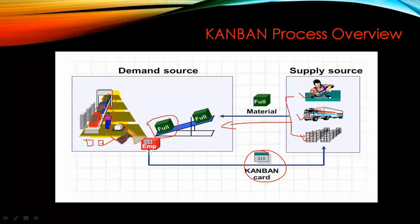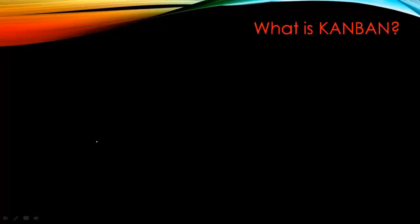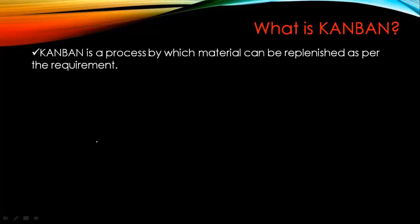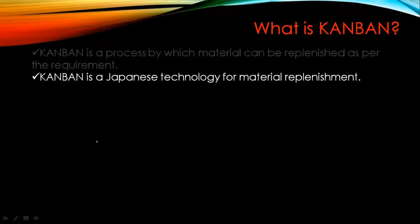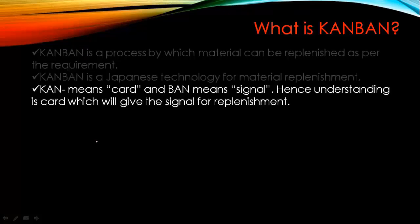I hope the Kanban process in general is pretty clear. Let's see some theory about it. Kanban is a process by which material can be replenished as per requirement. Kanban is a Japanese technology for material replenishment. 'Kan' means card and 'Ban' means signal or visualization. Hence, the understanding is: a card which will give you a signal for replenishment. Looking at something, we know it is empty — that's what Kanban is: a visual card or signal card.